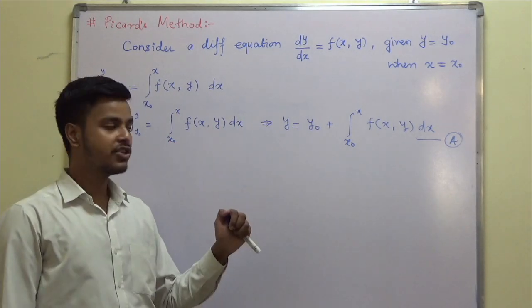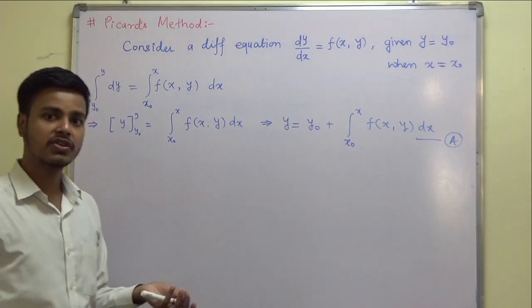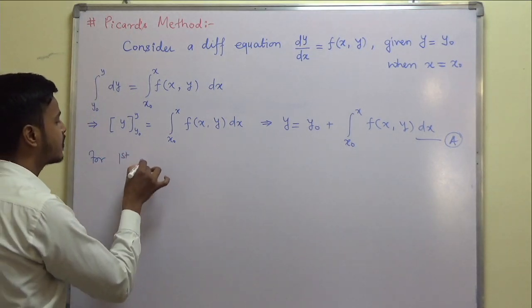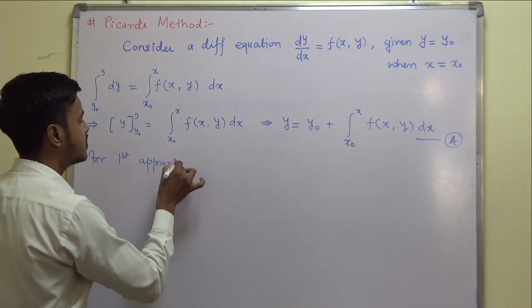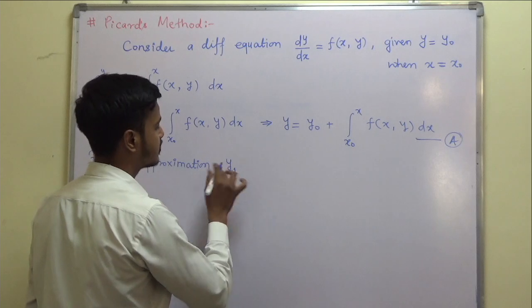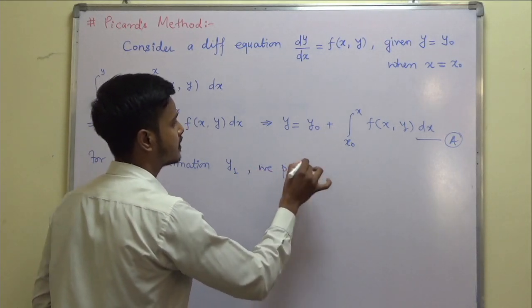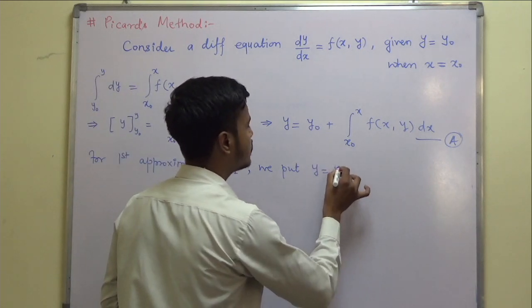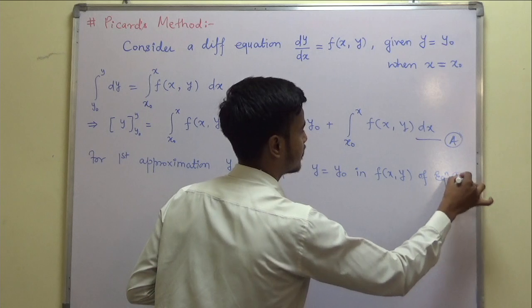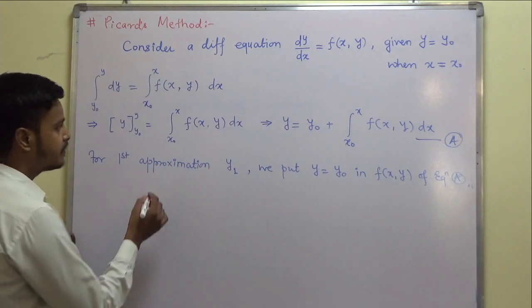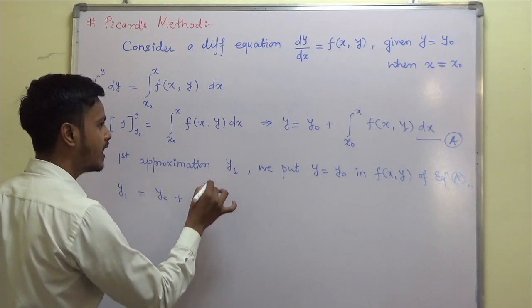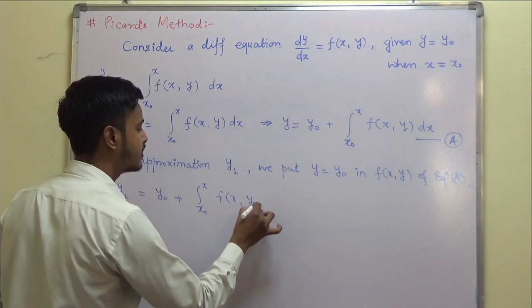We are going to find approximations based on this equation. For the first approximation y₁, we put y = y₀ in f(x, y) of equation A. So we get y₁ = y₀ + ∫[x₀ to x] f(x, y₀) dx.